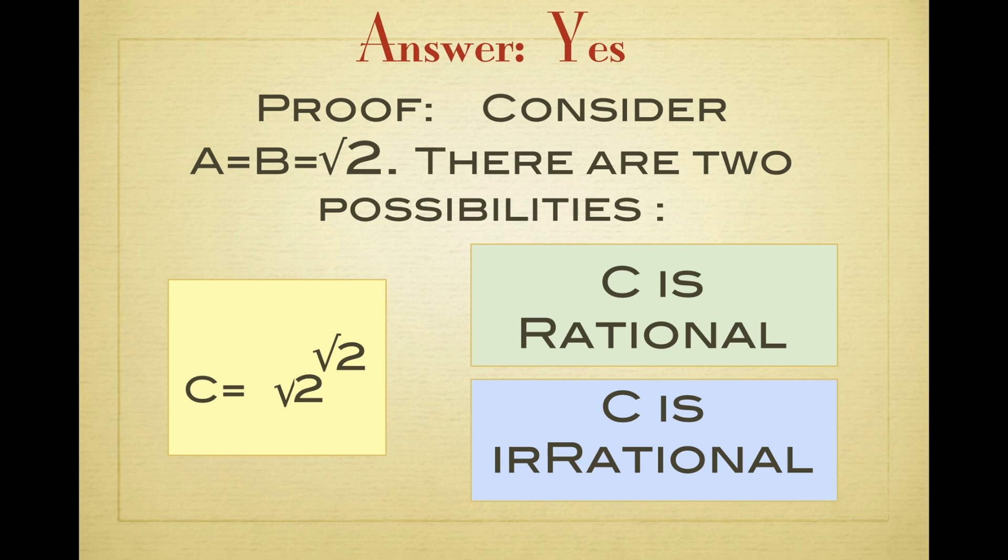But it's a non-constructive proof. Take a equal b is equal to square root 2. Now there are two possibilities.